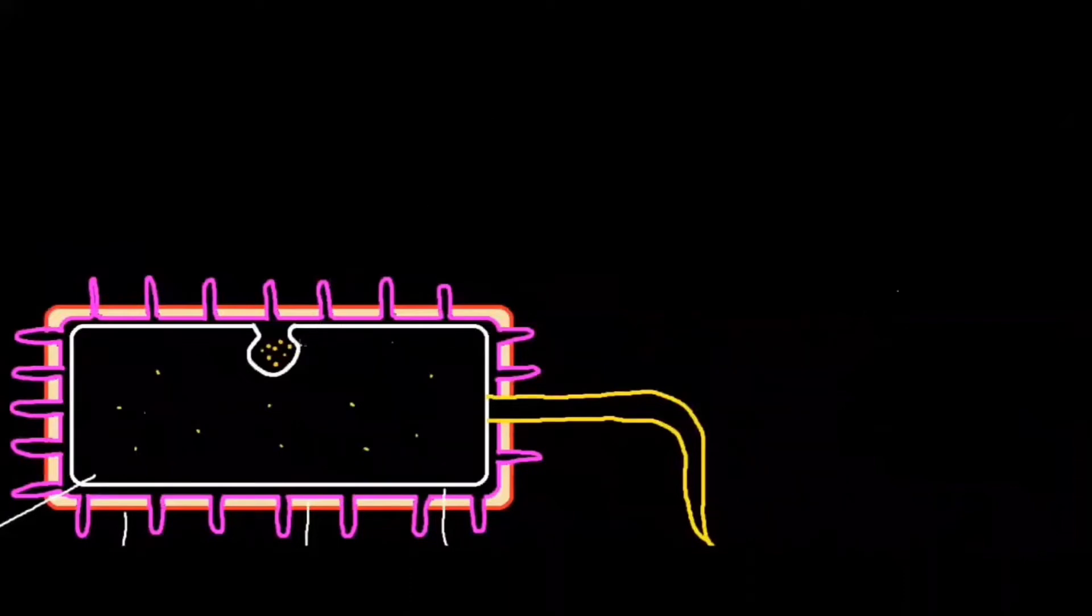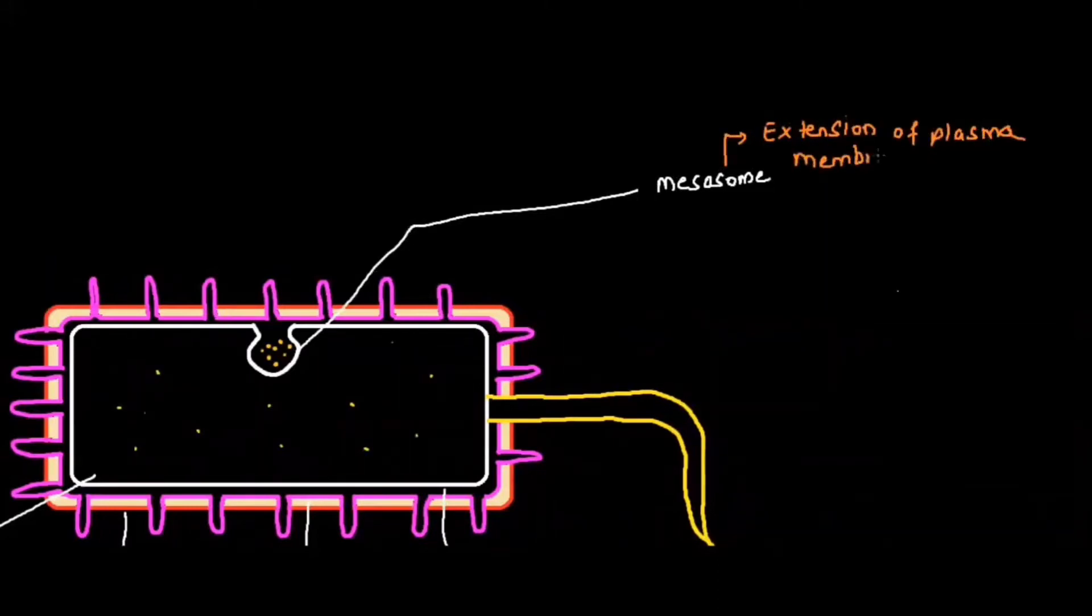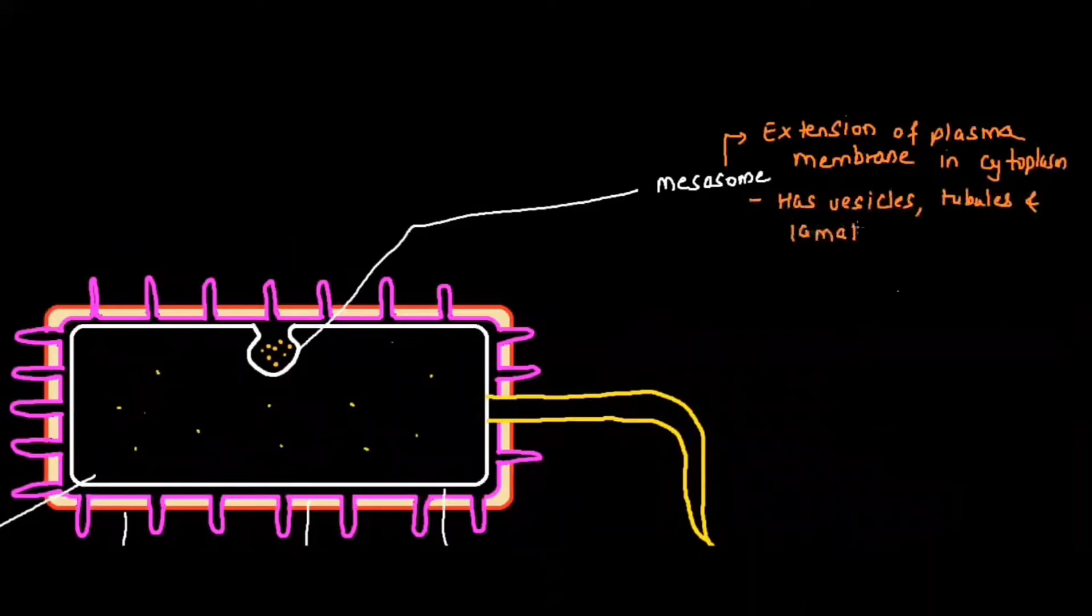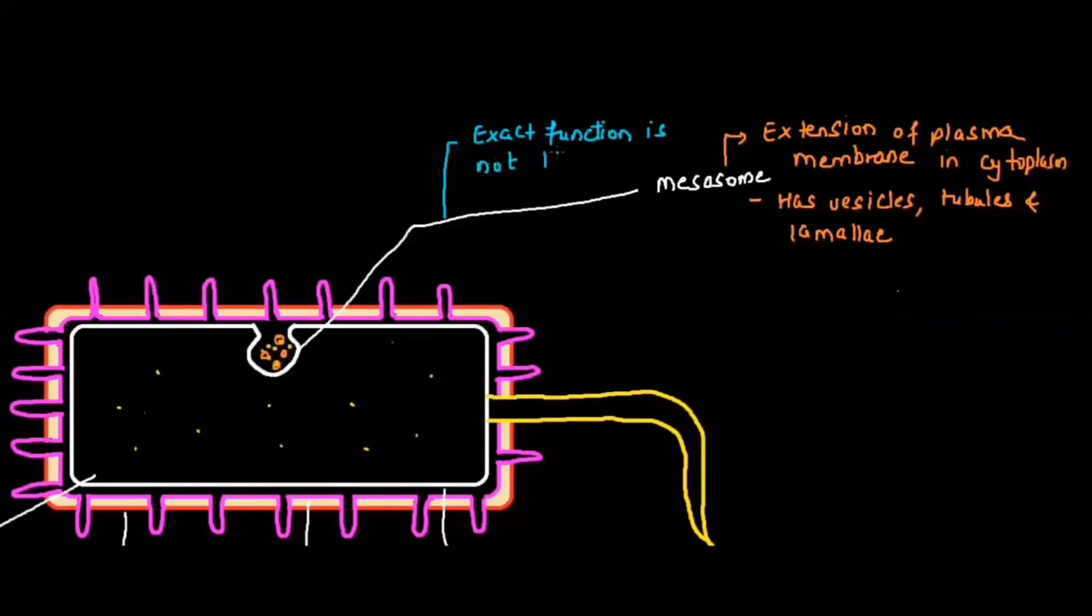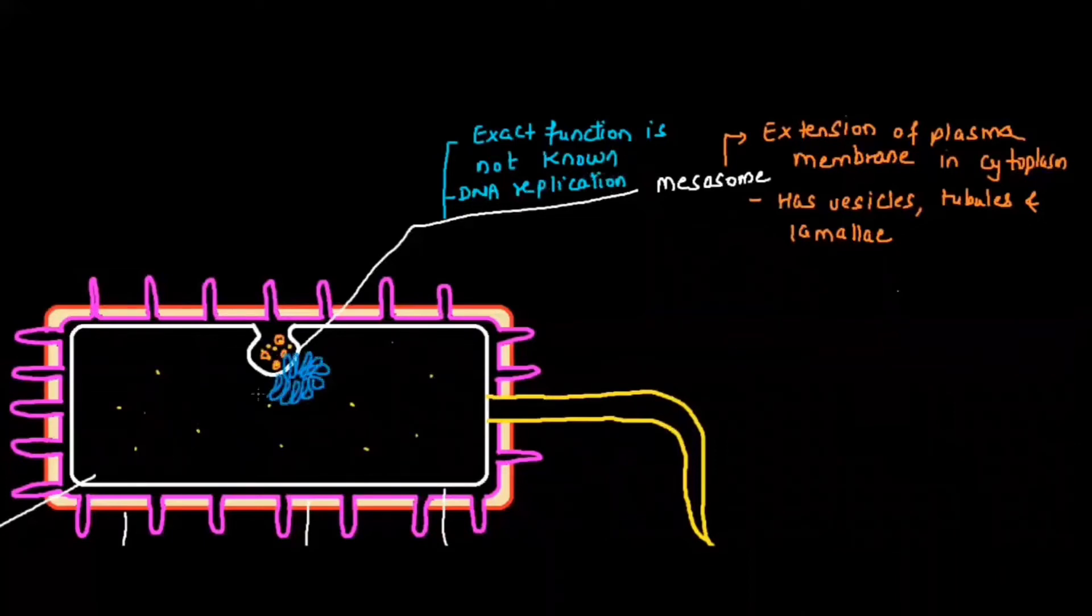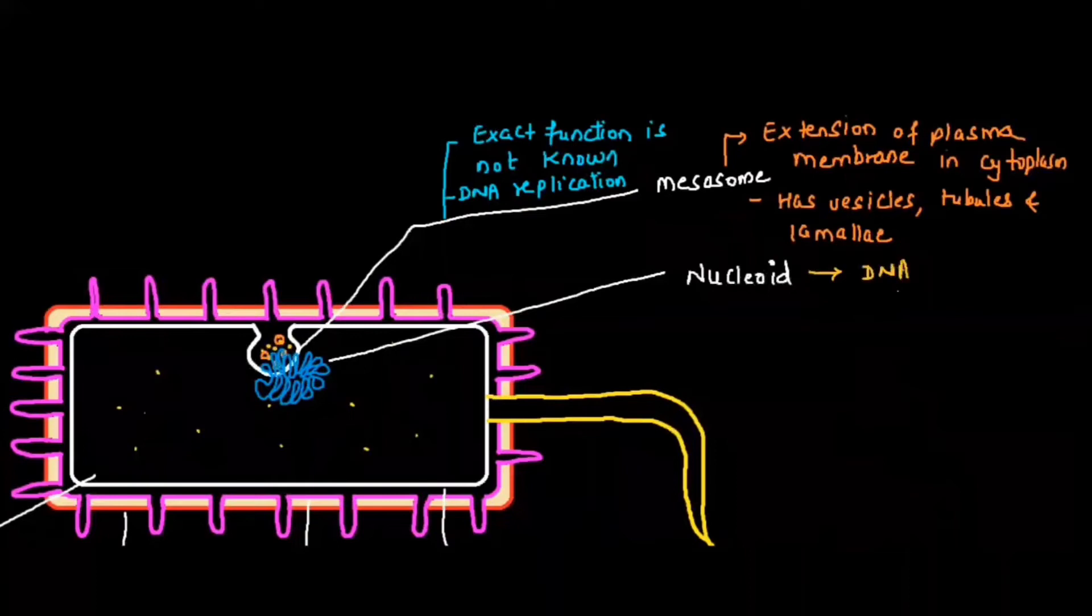Let's talk about the first important component called mesosome. Whenever I talk about mesosome, first I need to understand it is nothing but the extension of plasma membrane in the cytoplasm. It has basically vesicles, tubules, and lamellae inside. What is the role of the mesosome? The exact function is not yet known, but it is believed that it helps in DNA replication. This mesosome provides attachment for the DNA.